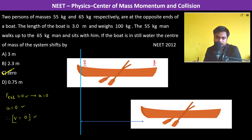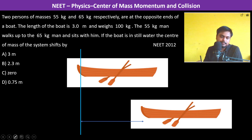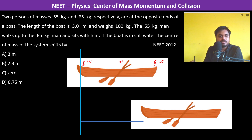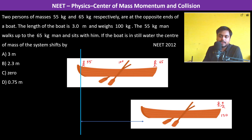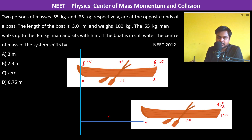Sometimes the question asks how much the boat itself moves, so let us use a diagram to solve this. We have the 55 kg person, the 65 kg person, and the 100 kg boat. When the 55 kg man walks to the 65 kg man, both are together making 120 kg combined. We set coordinates: the left end is 0, the center of the boat is 1.5, and the right end is 3. If the boat moves by x, the new coordinates become x, x plus 1.5, and x plus 3.